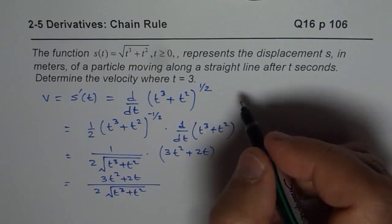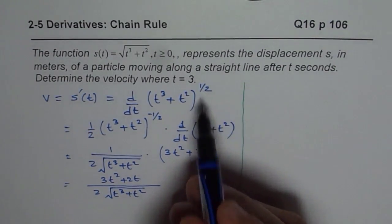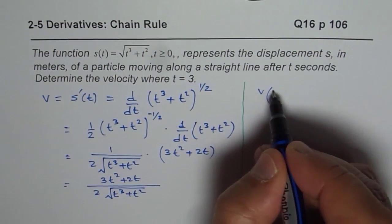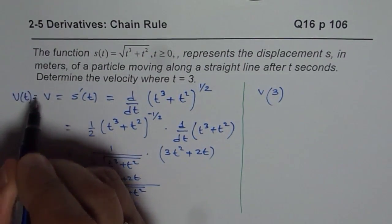Now we need to find velocity at t equals 3. That means velocity at 3, well I could have written this as v(t).